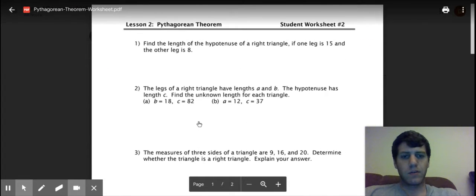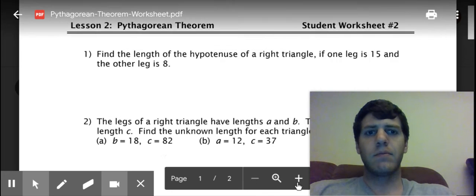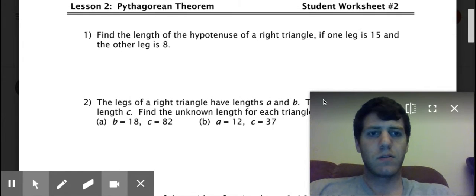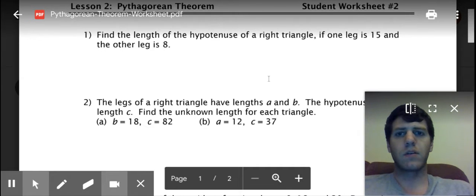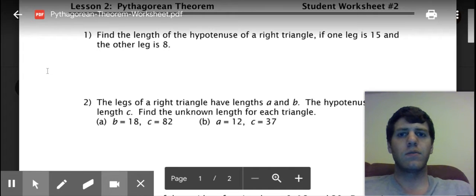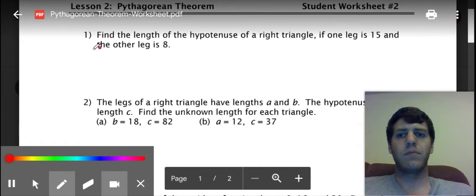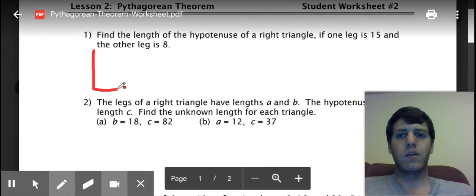So I'm going to go through some of these problems. Okay so we want to zoom in a little so we can see. Okay so number one here says we want to find the length of the hypotenuse of a right triangle if one leg is 15 and the other leg is eight. So the best thing to do is to draw a diagram. So we have a right triangle so I'm going to draw a right triangle. Okay so we have a right angle here.